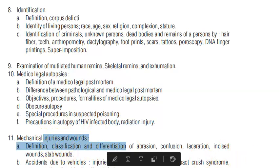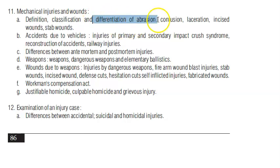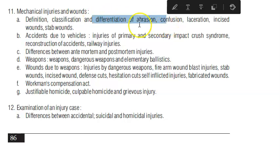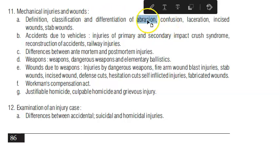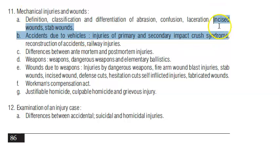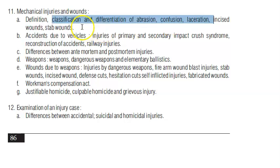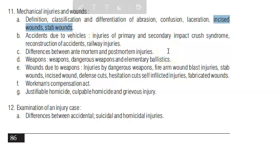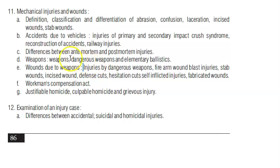Coming to the chapter on mechanical injuries and wounds, you will have to know the different types of wounds - blunt wounds, sharp wounds, abrasion, contusion, laceration, incised wounds, and stab wounds. Incised and stab wounds are classified as sharp wounds. Road traffic accident injuries and railway injuries are each separate topics.